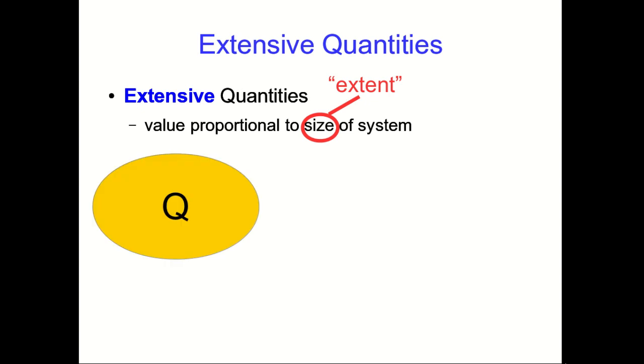But let me set up how you test whether a quantity is extensive. Let's say we have a system. So that yellow oval is our system and there's some quantity Q that's a property of the system as a whole.